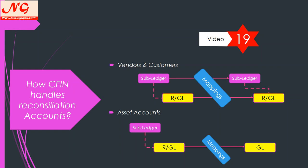How does CFIN handle a reconciliation account? For vendors and customers, the sub-ledger is attached to the reconciliation GL account. You map your vendor account in the sub-ledger box — vendor is mapped to a vendor, and GL is mapped to a GL. That is a simple mapping: object to object. Based on mapping cardinality — whether it is N-to-1, 1-to-1, keep data, or clear data — it accordingly derives the vendor, customer sub-ledger, and the GL in the Central Finance system when data is replicating.